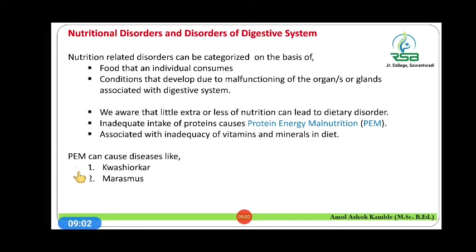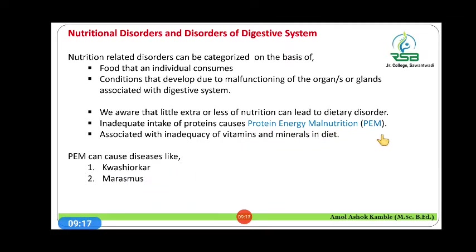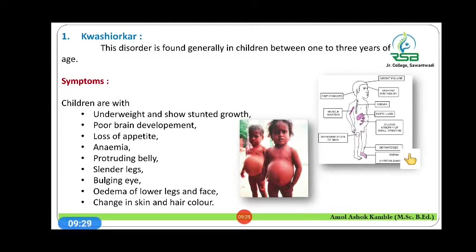Protein energy malnutrition can cause diseases like Kwashiorkor and Marasmus. Let us discuss the first protein energy malnutrition disease — Kwashiorkor. This disorder is found generally in children.